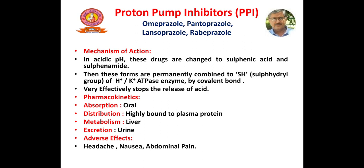Proton pump inhibitors are given orally and are highly bound to plasma protein. They are metabolized in the liver and excreted mainly through urine. Adverse effects include headache, nausea, and abdominal pain.